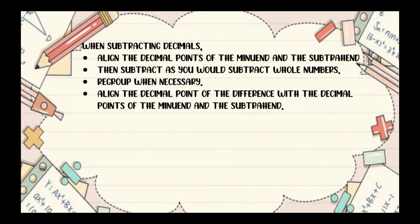When subtracting decimals, you need to align the decimal points of the minuend and the subtrahend, and then subtract as you would subtract whole numbers. Regroup when necessary, and lastly, align the decimal point of the difference with the decimal points of the minuend and the subtrahend.